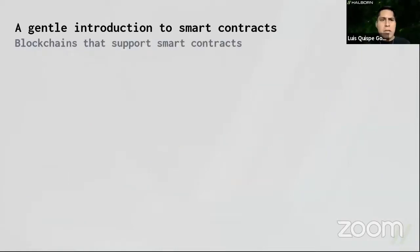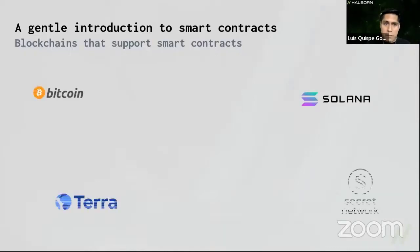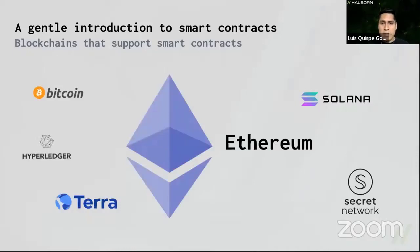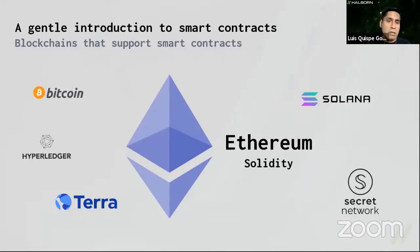Nowadays, what are the blockchains that support smart contracts? There are many of them, but the main one today is Ethereum. If you want to build a smart contract for Ethereum, you can use the Solidity programming language — it's not the only one, but it's one of the most popular.